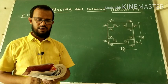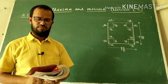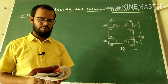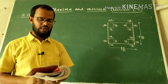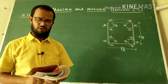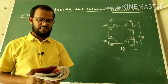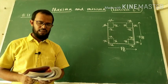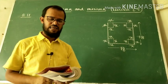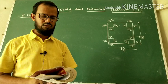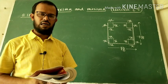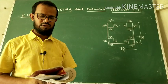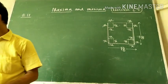The question is: a square piece of tin of side 18 centimeters is to be made into a box without top by cutting a square from each corner and folding up the flaps to form a box. What should be the side of the square to be cut off so that the volume of the box is maximum?